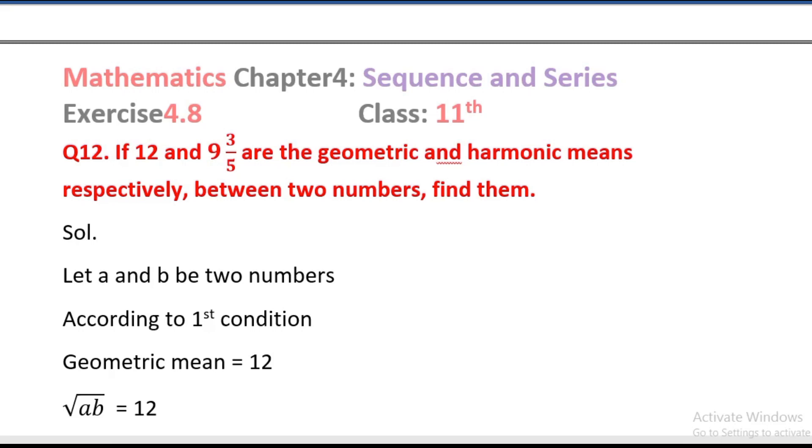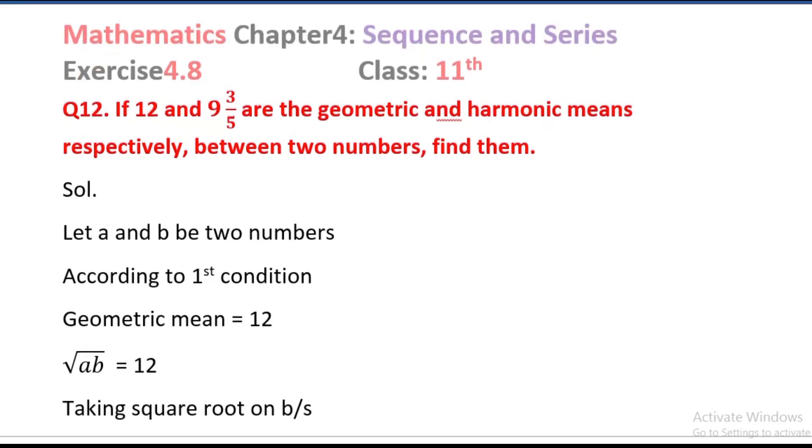Let a and b be two numbers. According to the first condition, geometric mean is 12. So geometric mean formula, square root of ab equals 12. Taking square root on both sides, ab equals 12.